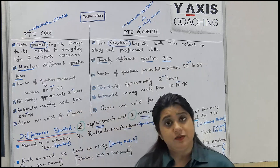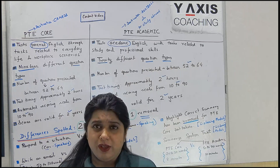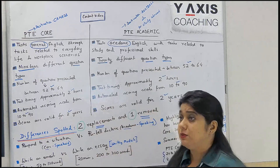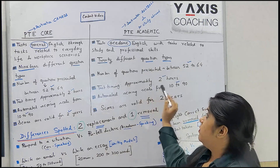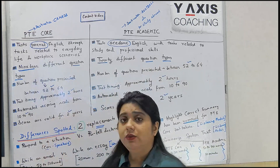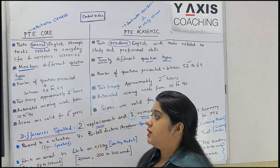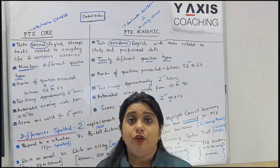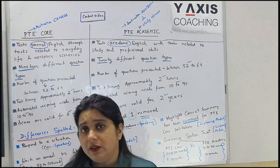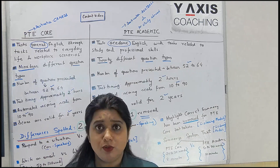The timing of the test - when writing PT Core or PT Academic, you have to invest around two hours. The test timing will always be approximately two hours for both. The ultimate scoring scale from 10 to 90 is the same for both Core and Academic. The scores are valid for two years - once you have written the test, from the day you receive the scorecard, your score will be valid for two years, irrespective of whether you are writing PT Academic or PT Core. So there are so many similarities.